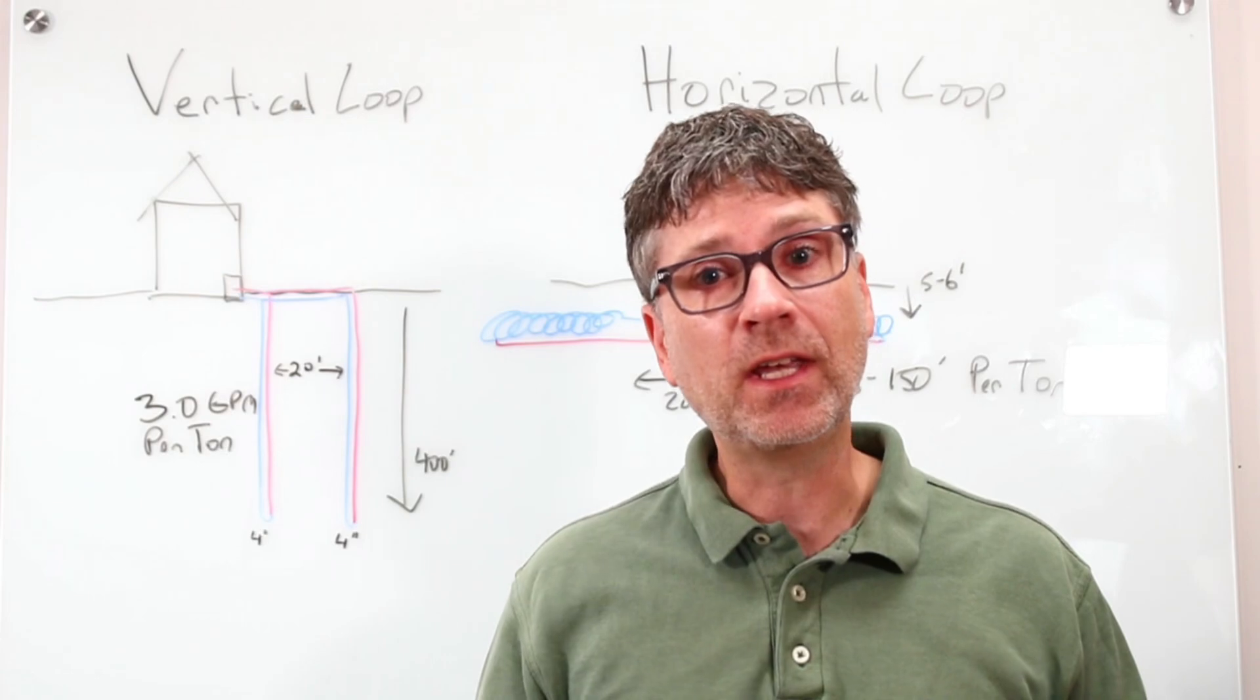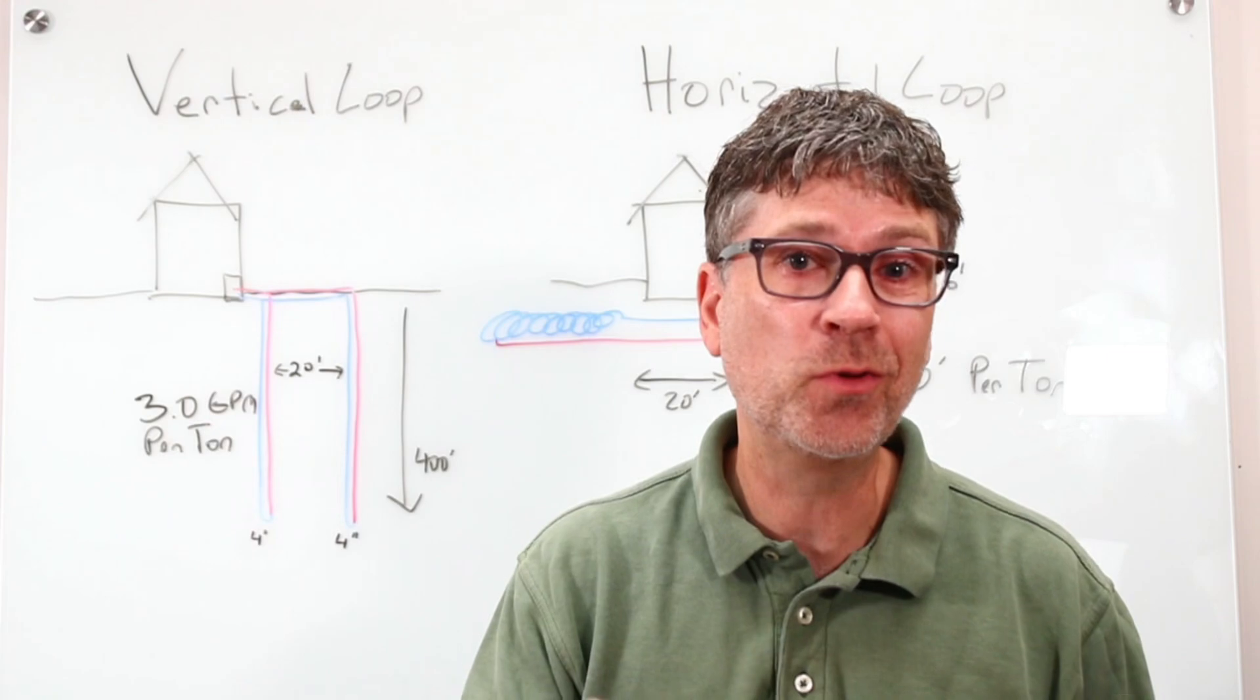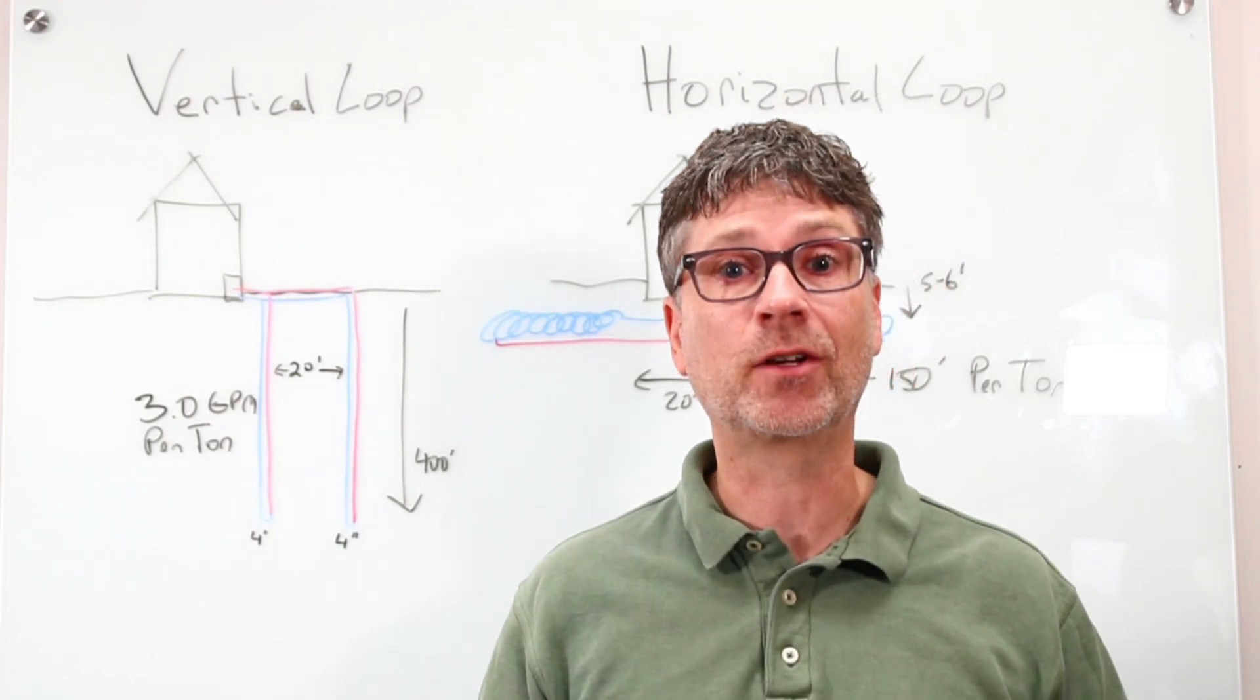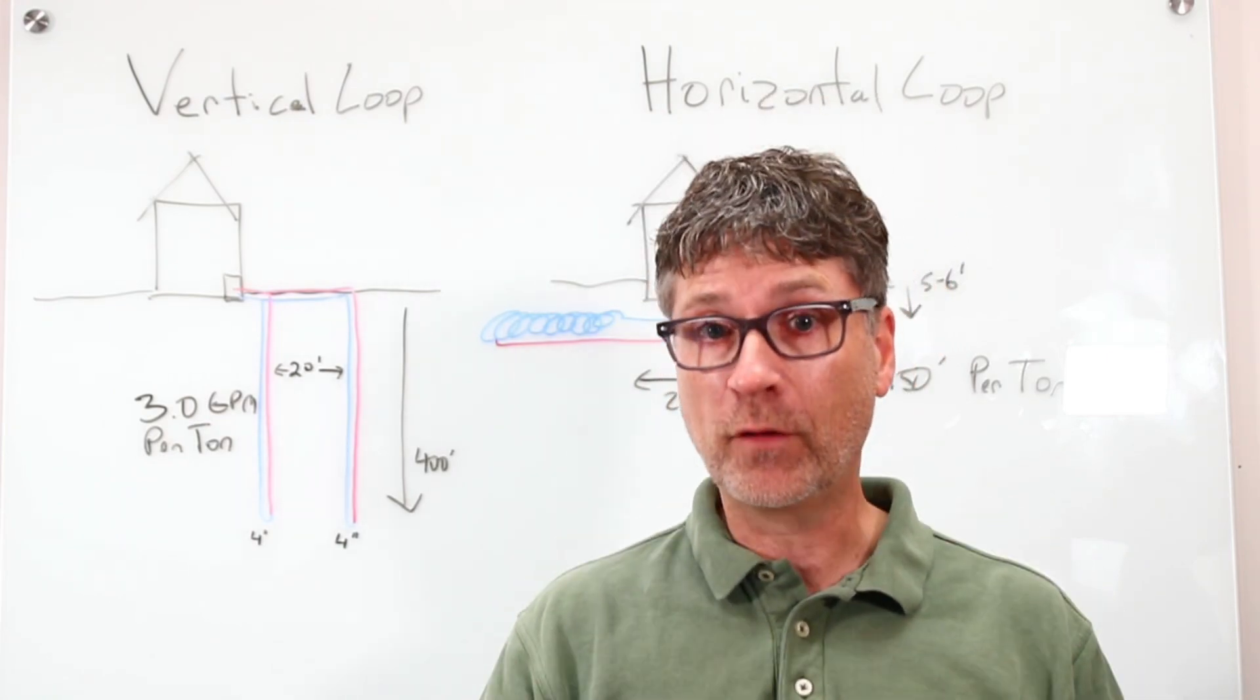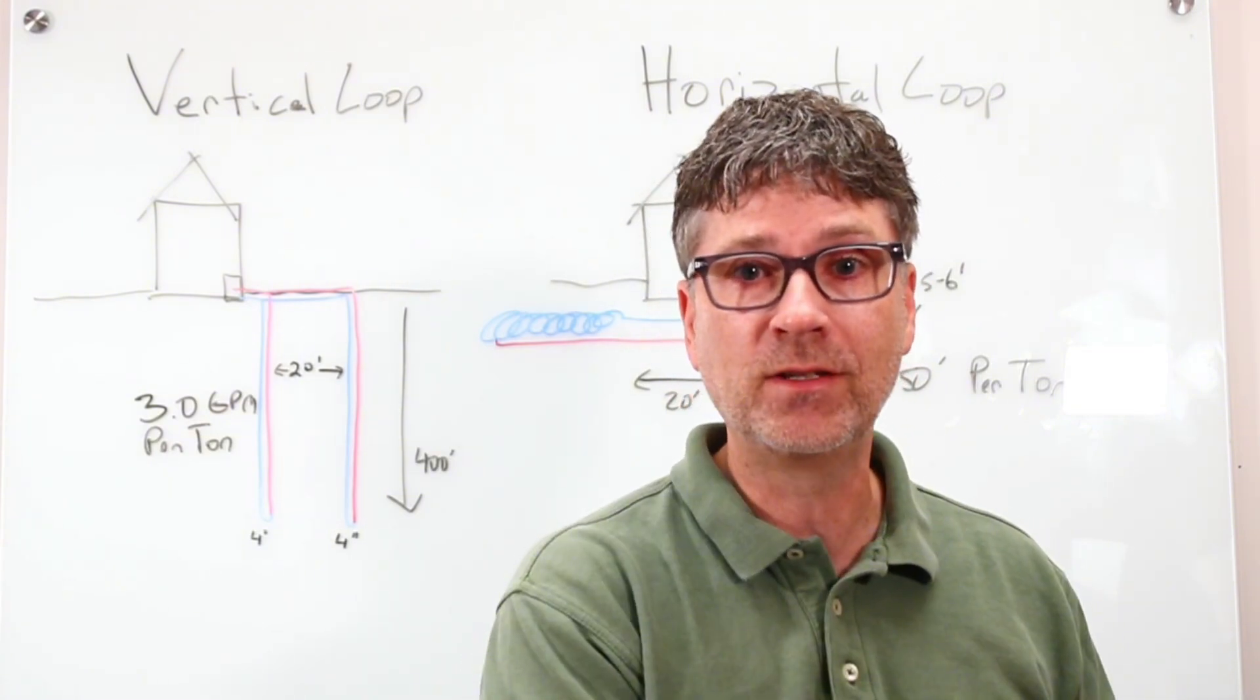And after some digging, we discovered that the loops were just way too short. Only 100 to 200 feet deep instead of the necessary 400 feet. For a four-ton system, that's just not enough pipe to transfer the heat back into the ground.